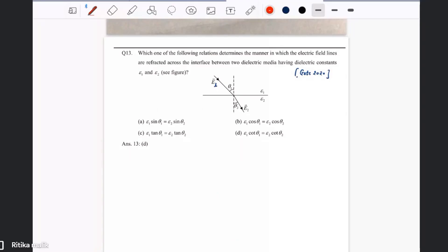Which one of the following relations determines the manner in which electric field lines are reflected across the interface between two dielectric media having dielectric constants epsilon 1 and epsilon 2?